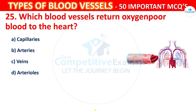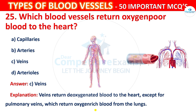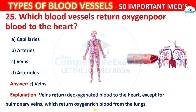The correct answer is C, i.e., Veins. The veins return deoxygenated blood to the heart, except for pulmonary veins which return oxygen-rich blood from the lungs.